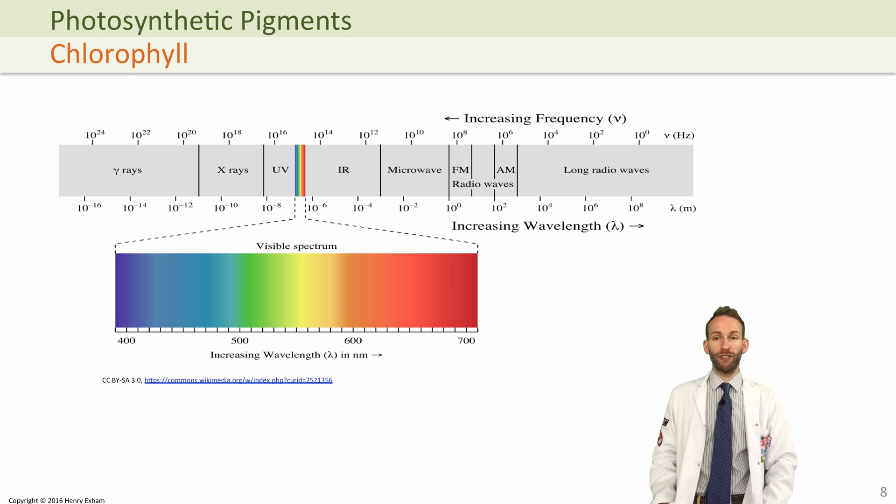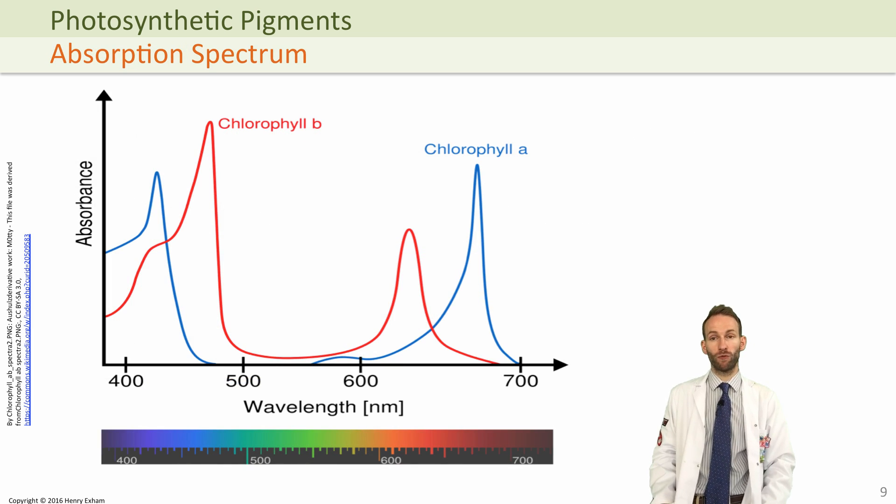Different pigments in the chlorophyll will absorb different wavelengths between that range of 400 and 700 nanometers. And actually you can look at an absorption spectrum for each individual pigment.